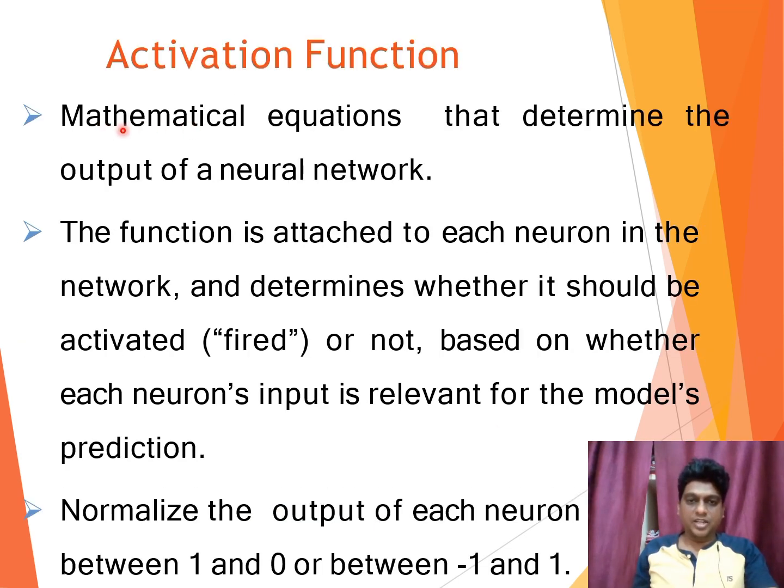With the mathematical functions we can able to determine the neural network's output. Here the activation function helps to find out whether the particular neuron should be activated or not and based on the neuron's input it helps to normalize the output of the neuron and makes them in the range either in between 1 and 0 or minus 1 to 1.